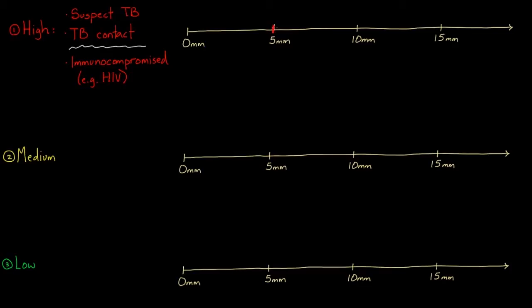So in this first group, the high risk group, either I'm really worried they have it or I'm worried that if they did get it, they would get really sick with it. And for these folks, a positive test would be induration. Remember, PPD, you're measuring induration. Anything above five millimeters would be considered positive.